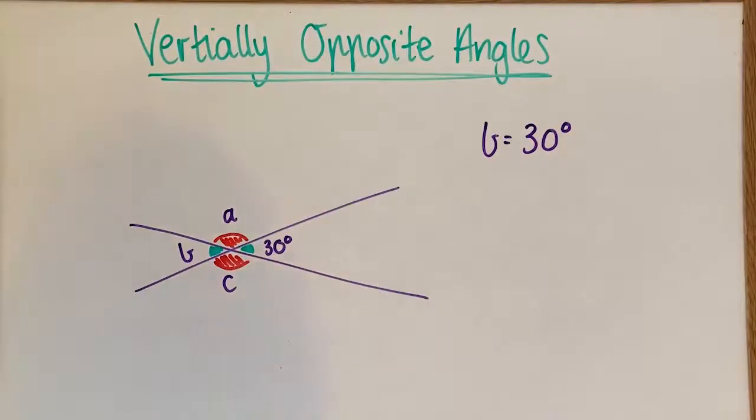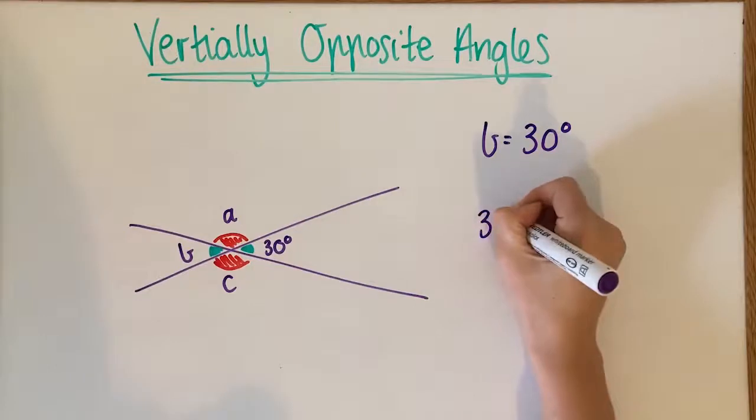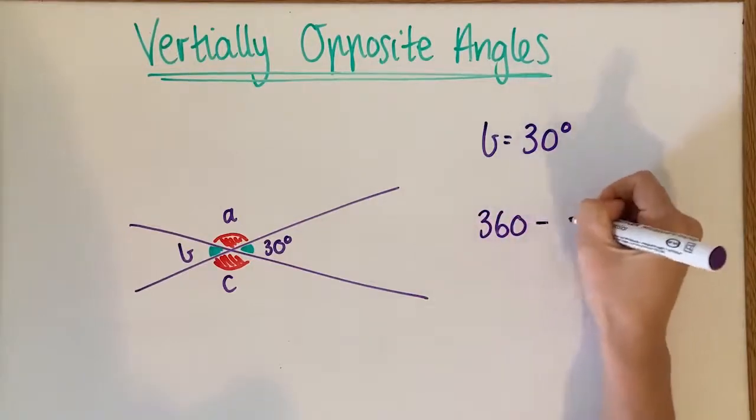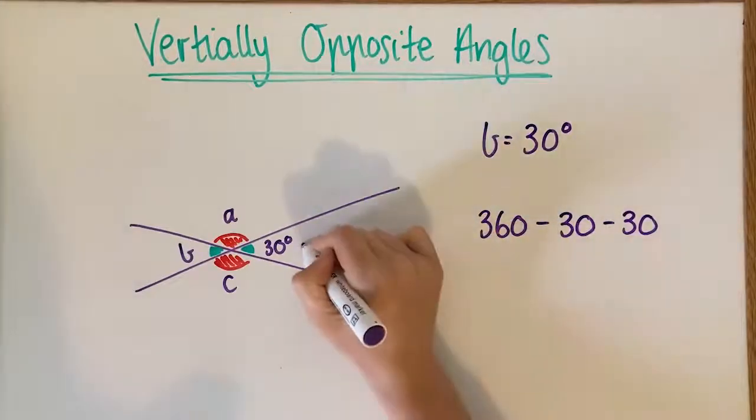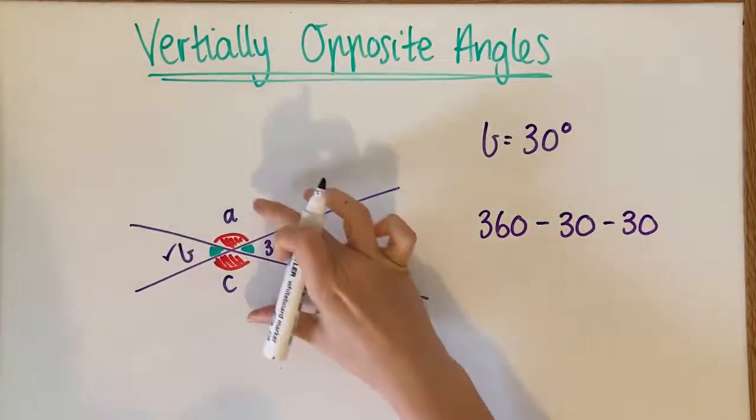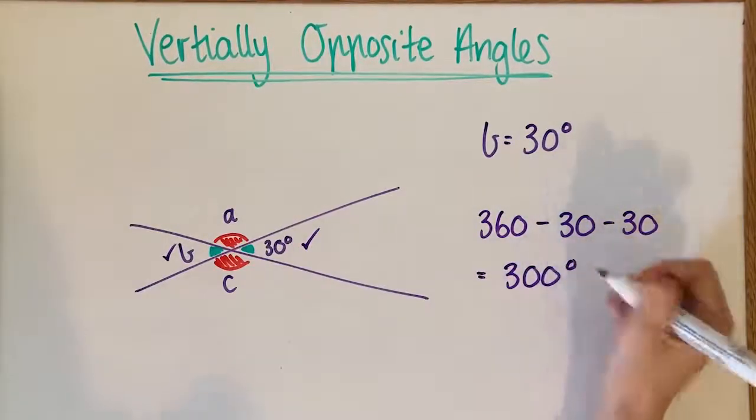But to work out these two remaining ones, I need to use my knowledge of a full revolution. So what I'm going to do is I'm going to go 360 minus 30 minus another 30 because I'm going to take away this and I'm going to take away this and that'll leave me those two numbers. So that'll leave me with 300 degrees.